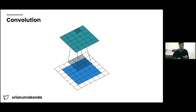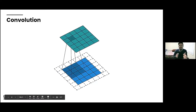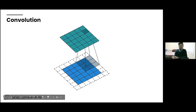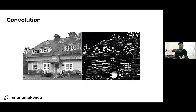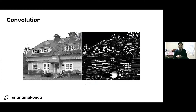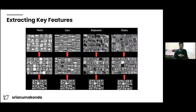Generally, what a convolution does is it downscales the image to a lower quality while being able to learn features from it. So for example, if I had this image of a house, this would be the image after convolution — although the quality is a lot lower, we can still tell that it's a house. The model learns through these features.